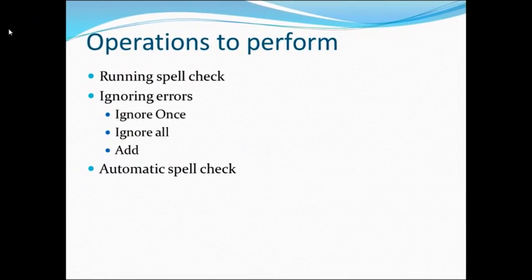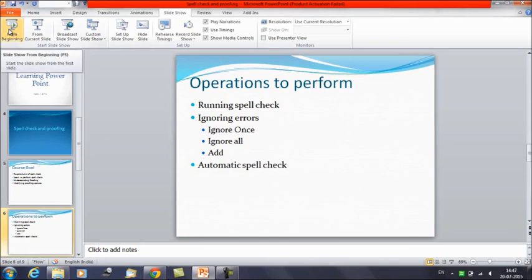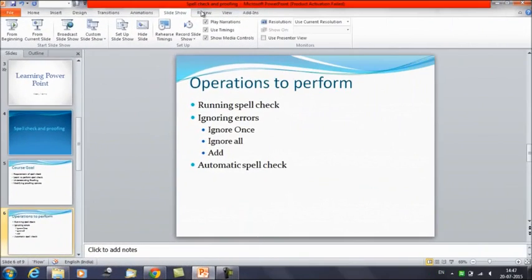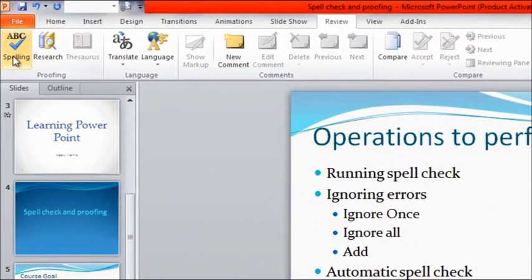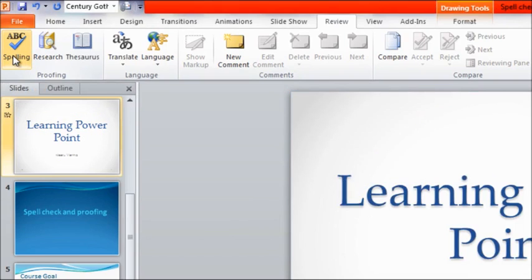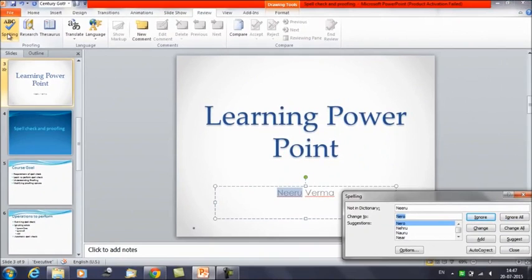We will talk about the operations to perform. Running the spell check is the first operation we are going to discuss. Let me show you how we can run the spell check. Click on the Review tab and you will get an option here: Spelling. Click on it, or the shortcut is to press the function key F7 to run the spell check. You will get a dialog box that opens and gives you certain suggestions for the incorrect spelling.